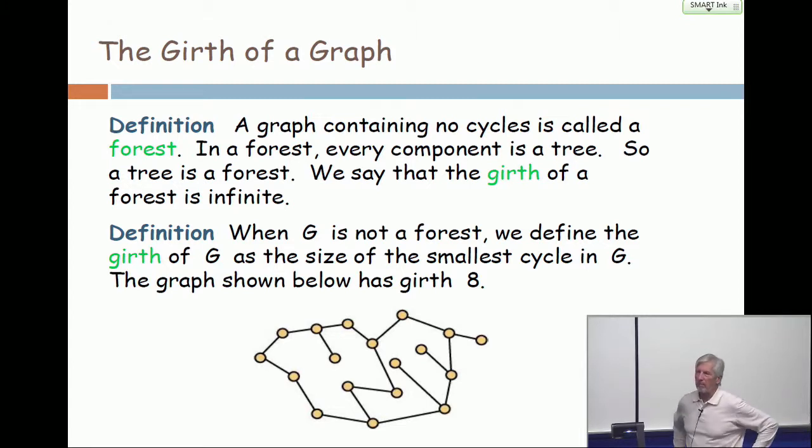What's the chromatic number of a forest? Might be one. Are you with me? The chromatic number of a forest is either one or two. When is it one? Just a bunch of loose points. Has no edges.